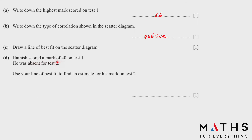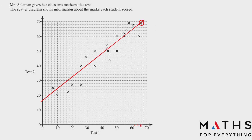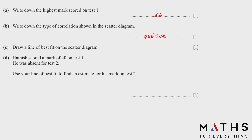Part d: Amish scored a mark of 40 on Test 1. He was absent for Test 2. Use your line of best fit to find an estimate for his mark on Test 2. He got 40 on Test 1 — go up and find the corresponding mark on Test 2. It's 48. Any answer between 46 and 50 is acceptable.